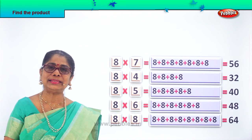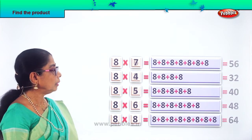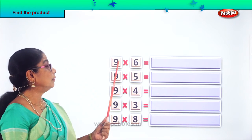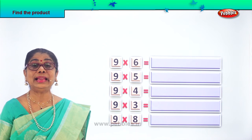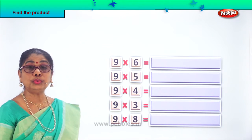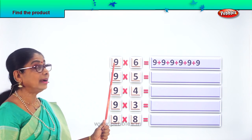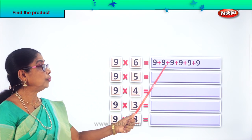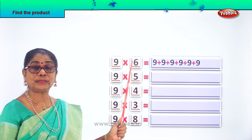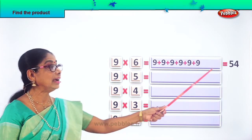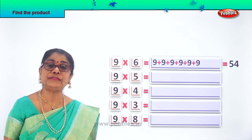Did you enjoy the exercise? Let's look at another exercise. Find the product of 9 into 6. What is the product of 9 into 6? Use the repeated addition method and write 9 six times: 1, 2, 3, 4, 5, 6. What is 9 into 6? 9 sixes are 54.